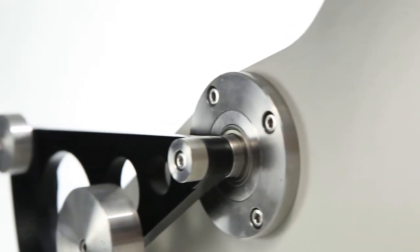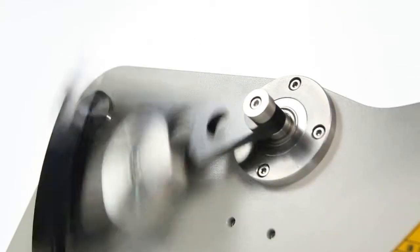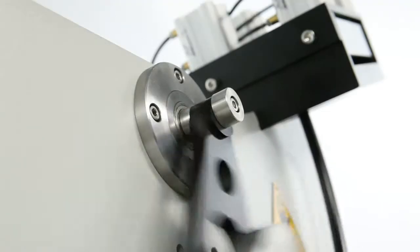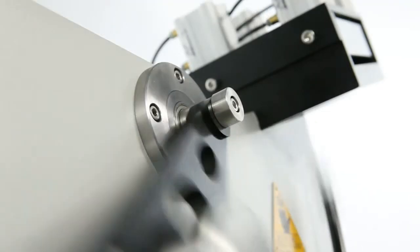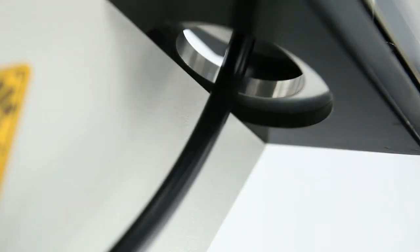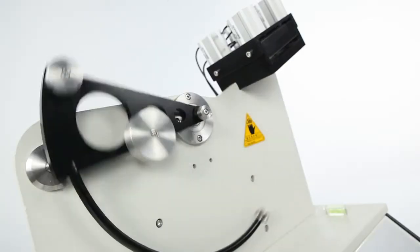The built-in high-resolution optical encoder measures the angular position of the pendulum at the instant when the hemispherical head passes through the specimen and converts this measurement to the impact resistance of the specimen. This greatly enhances the accuracy and repeatability of the test results and minimizes errors caused by human factors during the testing process.